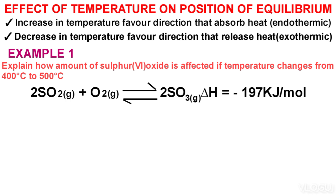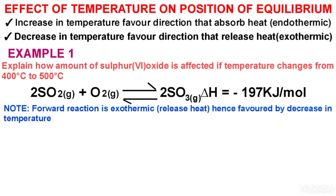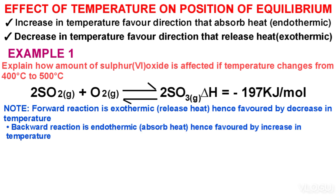Note that the enthalpy change of −197 kJ/mol means the forward reaction is exothermic (releases heat), hence favored by decreasing temperature. The backward reaction is endothermic (absorbs heat), hence favored by increasing temperature.